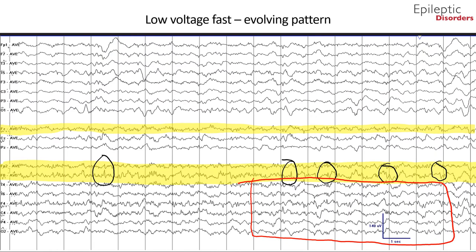In the average montage of the same page, there is a clear field outlined in yellow with FP2, F8, and frontal midline FZ regions involved. Note also in the F8 region there is a sharp wave embedded within the fast activity, outlined by the black circles. This sharp wave becomes more apparent as the seizure evolves and progresses, especially towards the end of the page.